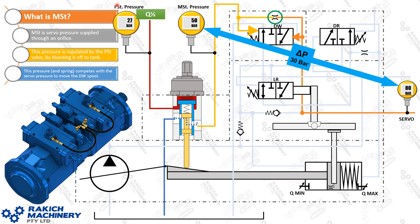I'm showing the pump here in Q-half, so we're at 50% PST pressure — 27 bar on machines that run to 42 bar. At that position you should get a delta P of 30 bar, so 30 bar differential between your servo and your MST pressure. On later model 6060s which have a 50 bar servo input, the 30 bar delta P still applies, so you should have 20 bar there. And on the Liebherr machines it's 55 bar, so you should get 25 bar there.